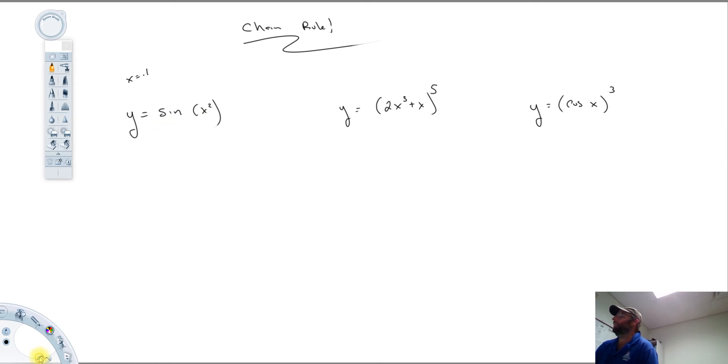So there's really two functions here. There's like what is typically referred to as an inner function and an outer function. The inner function is the x squared, and the outer function is the sine function.